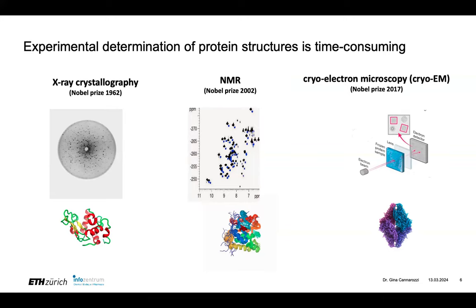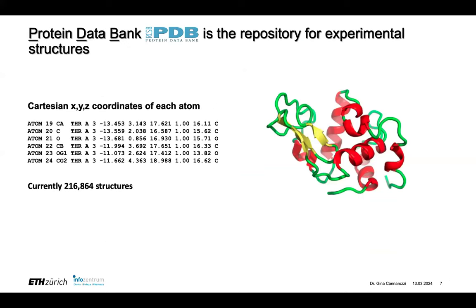Once you have an experimental structure, you're pretty confident that it's correct. You can see how hard it is to get experimental structures if you look at the Protein Data Bank. The PDB is the repository for experimental structures. People have been working on experimental structures for a long time, and currently there are 216,000 structures — far, far less than the number of proteins that exist. That's why it's nice to have something that can predict the structure from the sequence.